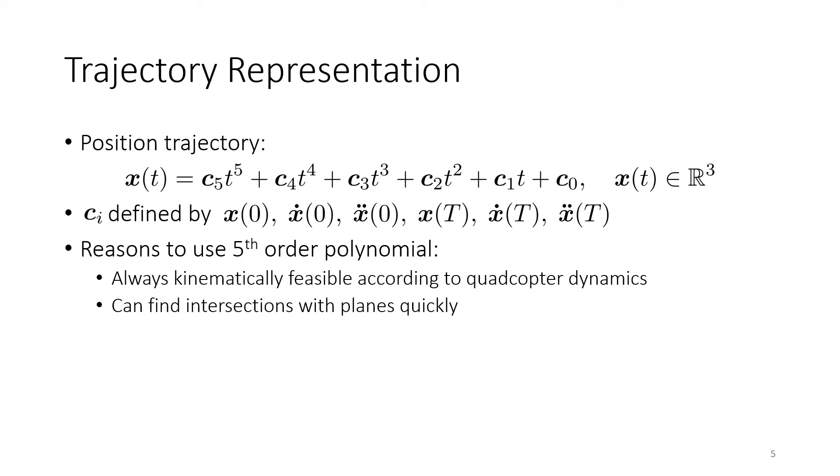Specifically, if we know one intersection point of our trajectory with the plane, let's say the initial position of the trajectory, we can find all other intersections with the plane by simply solving a fourth-order polynomial, which we can do in closed form.